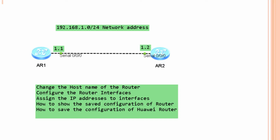In this lab, this is our topology. We will take two routers and connect them with a serial link. This is our network address. I will assign 1.1 to AR1 and 1.2 to AR2.